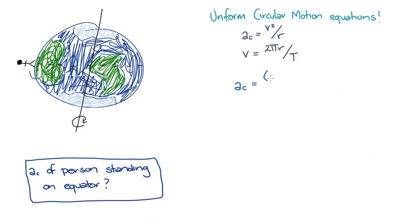If we substitute in our expression for the speed into our expression for acceleration, we find that the centripetal acceleration is 4πr over big T squared.